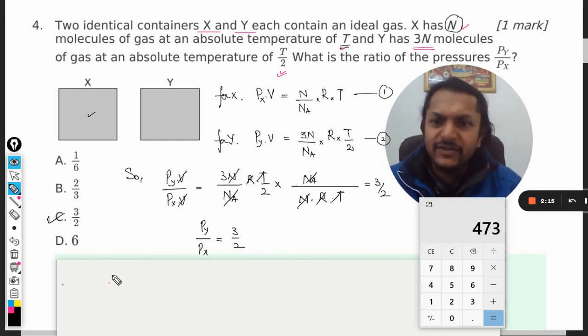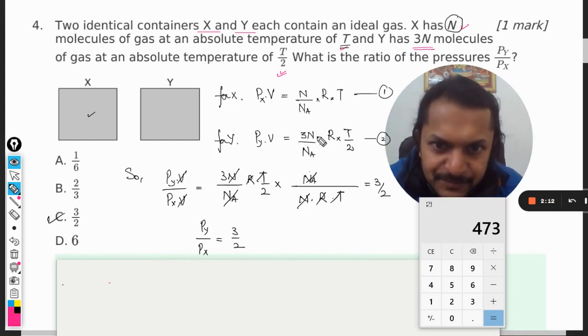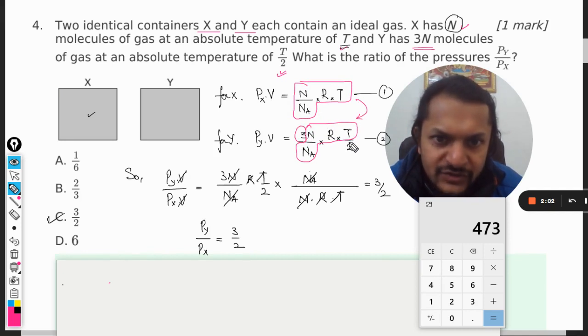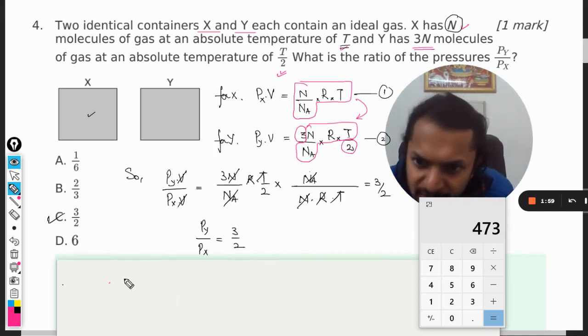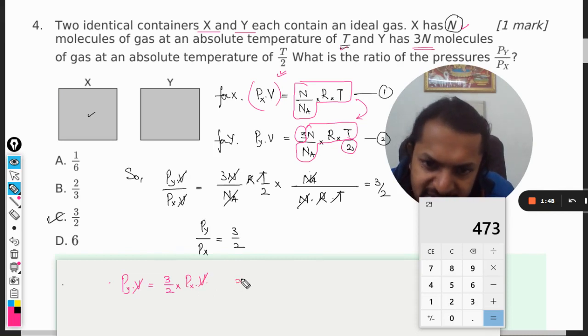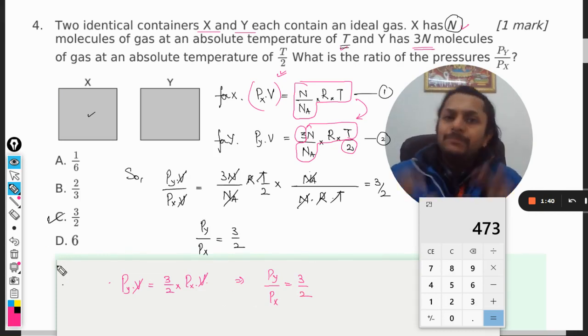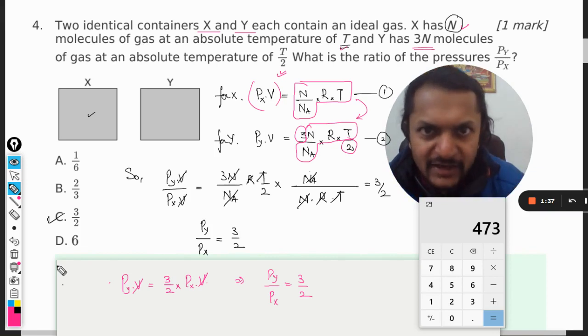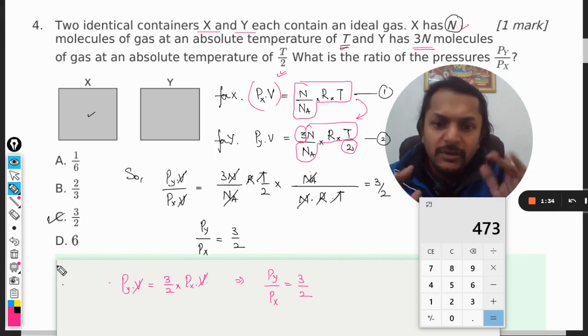The substitution process that I was talking about will be done like this: you can take this thing common, like N divided by Na R into T, and you can compare it here. So you can completely substitute this and only 3 and 2 will be left. So it will be Py into V will be 3/2 multiplied by, when you replace this complete term here instead of this, it will become Px into V. V and V gets cancelled out and you get the same answer, that is Py by Px is equal to 3/2. So mathematics depends upon you, like what methods from the algebra that you want to use, but otherwise you are going to get the same answer here.